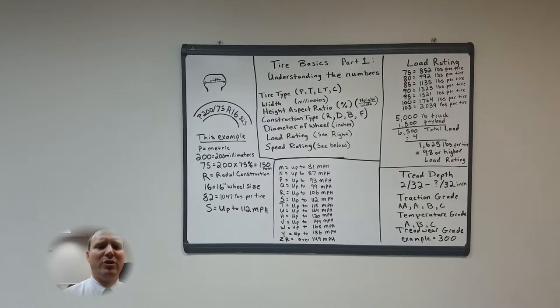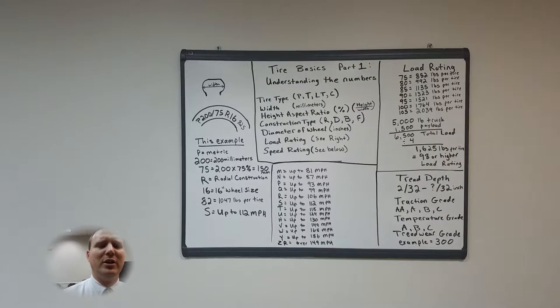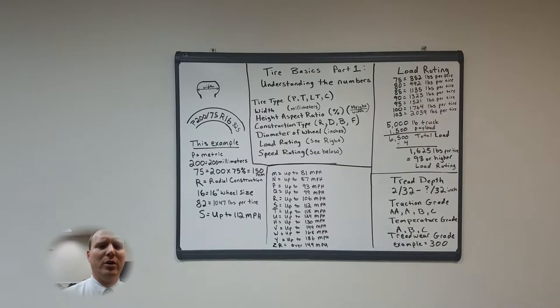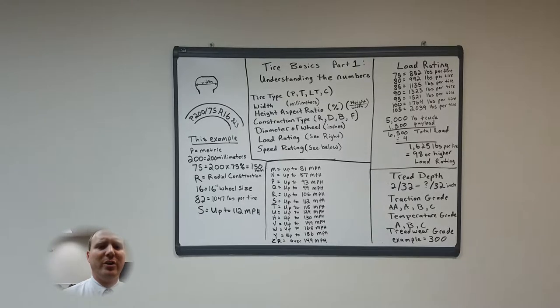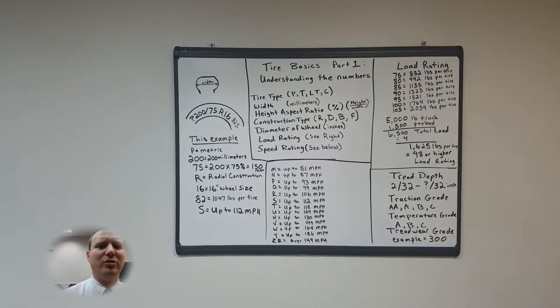After that is your construction type. Most commonly used is the radial or the R but you also have diagonal construction type, belted construction type, and run-flat construction type.